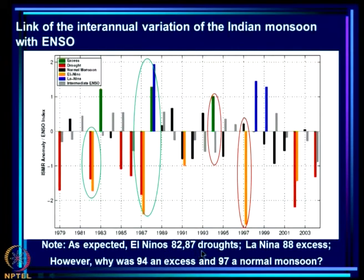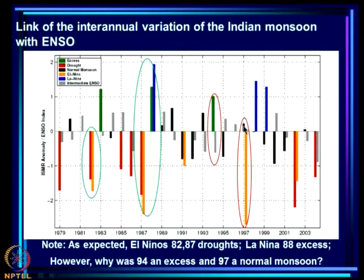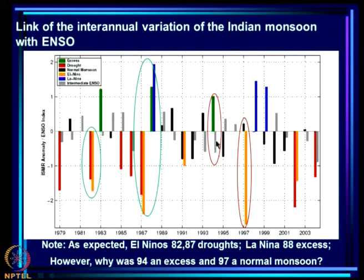As expected, El Niños of 1982 and 1987 produced droughts, and La Niña produced excess. However, why was 1994 an excess? ENSO was unfavorable — negative — and yet we got excess rain. And in 1997, with the strongest El Niño of the century, the monsoon rainfall was normal. Meanwhile, in 2002, with a much weaker El Niño, there was a large deficit. So why was 1997 a normal monsoon despite such a strong El Niño?